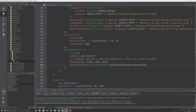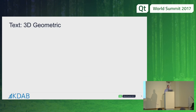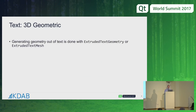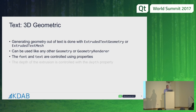The LevelOfDetailLoader is just the wrapper around that which allows you to specify separate QML files rather than managing the meshes yourself. We can also have 3D geometric text. There's a couple of ways: use the extruded text geometry if you want to manage the rendering yourself, or use the helper extruded text mesh which basically does everything for you. You can control the font, text properties, and the depth of the extrusion.